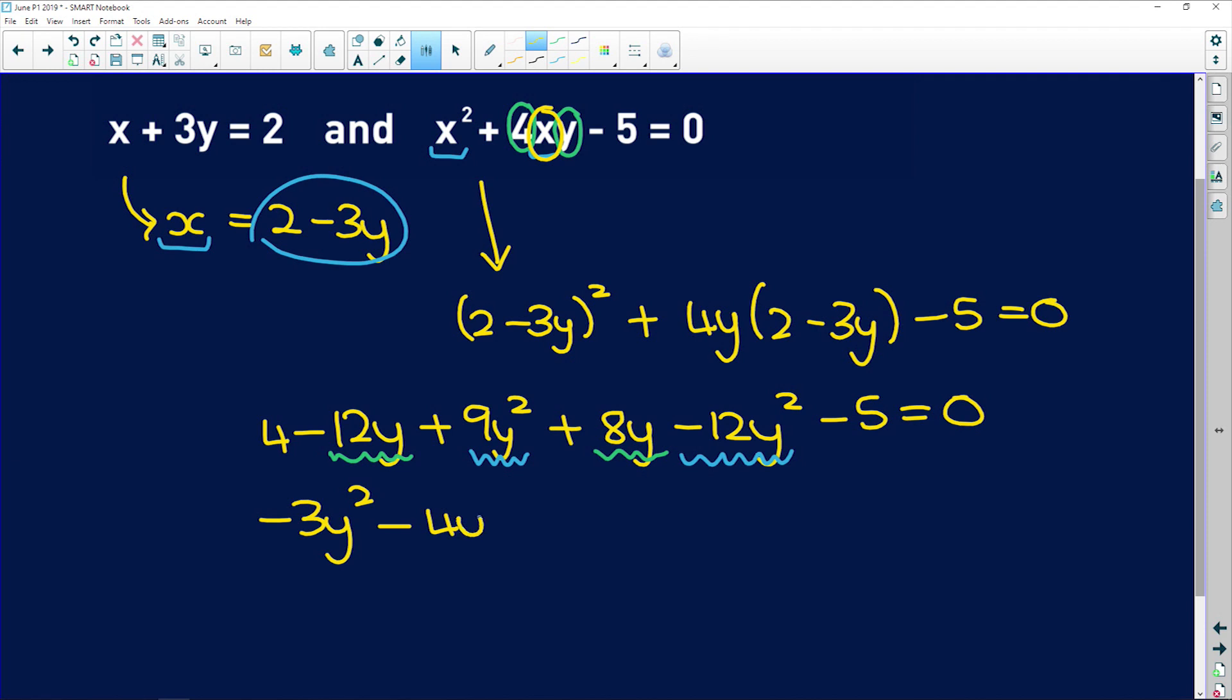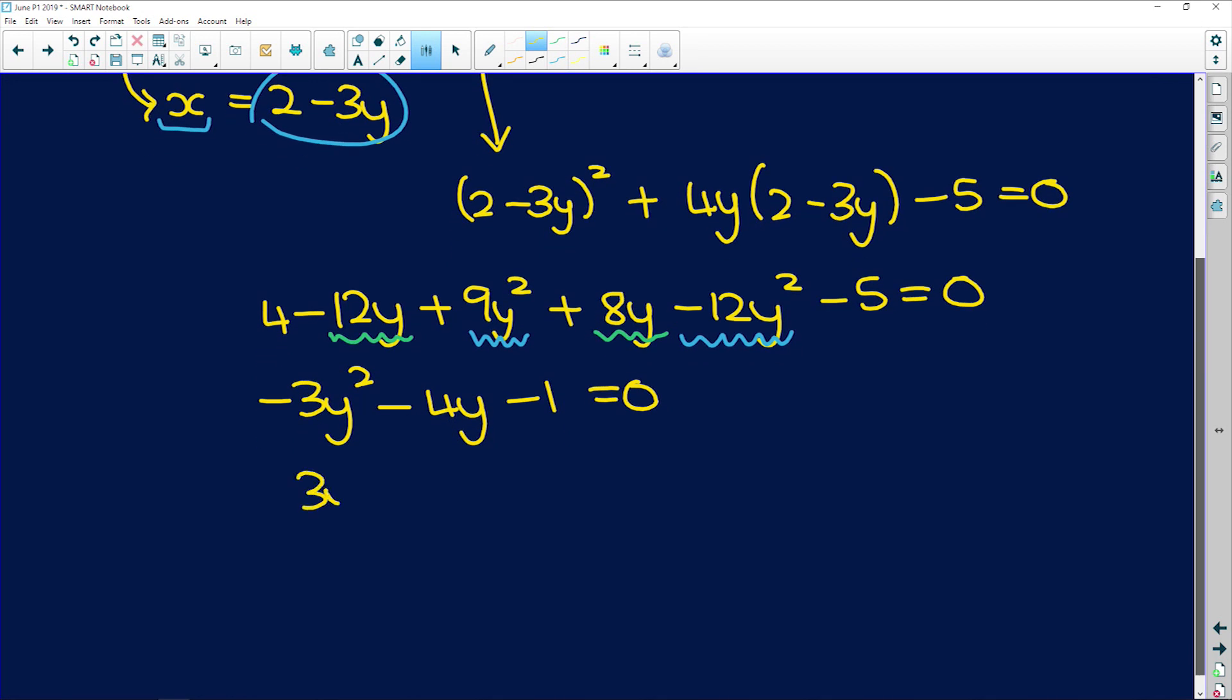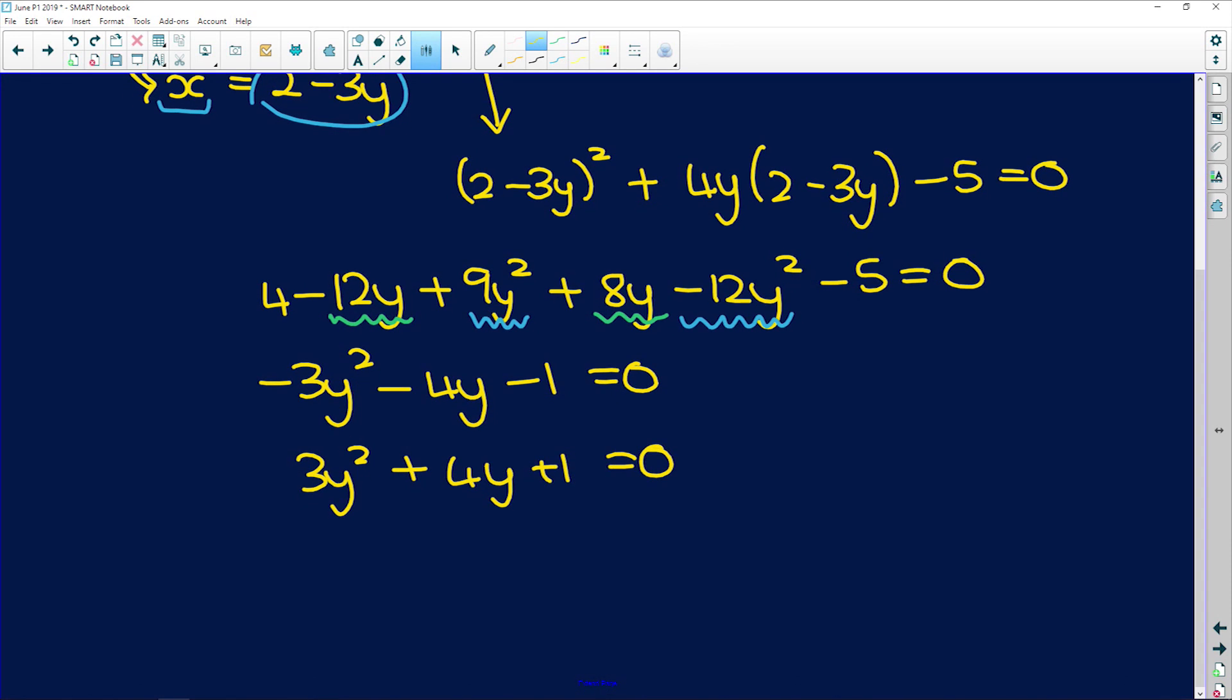So now I don't like it when my y squared is a negative, so I'm going to divide by a negative. And now, easy peasy factorization, we get 3y plus 1 and y plus 1 as our factors.